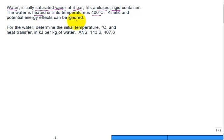Kinetic and potential energy effects can be ignored. For the water, as the system, determine the initial temperature in degrees C and the heat transfer in kilojoules per kilogram of the water. And here are the answers. Well, let's go ahead and think about this problem. So we have a container. It's rigid. Maybe I show it at state one, and then maybe I show it at state two. It doesn't change shape, and the mass is constant.